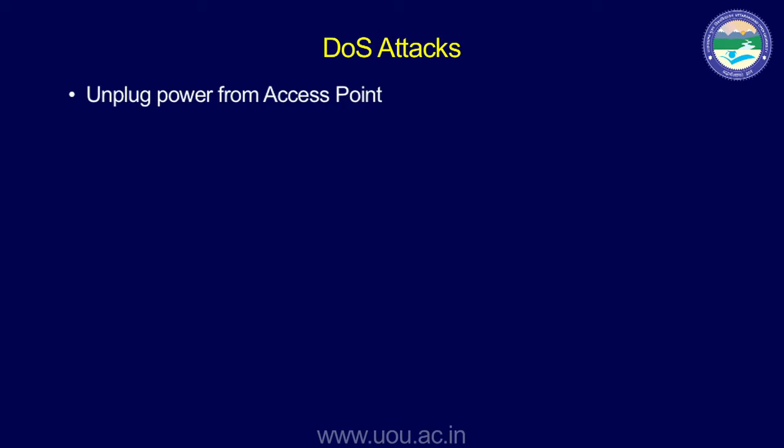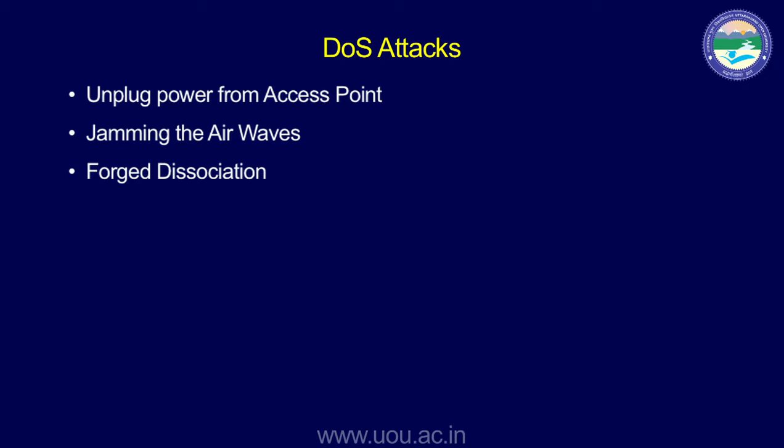Denial of service attacks on Wi-Fi networks include the simplest method of unplugging power from the access point — no power means no Wi-Fi. Jamming uses a jamming device to jam the airwaves so no Wi-Fi network is available. Rogue disassociation and rogue de-authentication involve the attacker continuously sending de-association and forced authentication requests to the access point, disconnecting clients repeatedly — that is the denial of service attack.